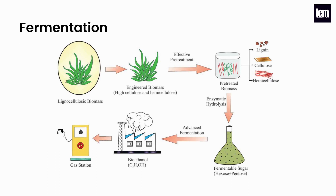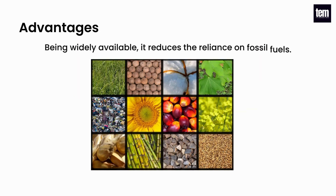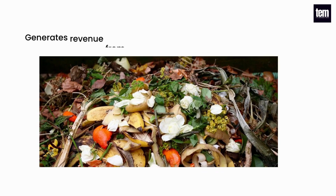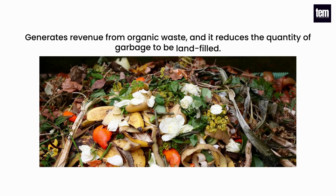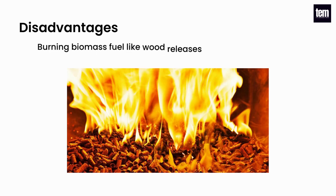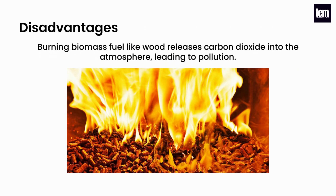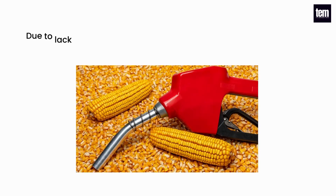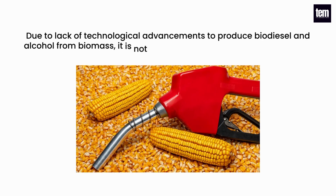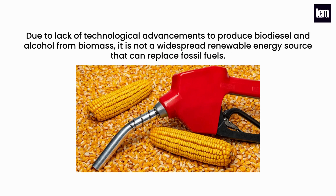Fermentation is the process of converting a plant's glucose into an alcohol called ethanol through the use of yeast. The ethanol is a liquid fuel that can be used as an automotive fuel. Advantages: being widely available, it reduces the reliance on fossil fuels. Generates revenue from organic waste and reduces the quantity of garbage to be landfilled. Disadvantages: burning biomass fuel like wood releases carbon dioxide into the atmosphere, leading to pollution. Due to lack of technological advancements to produce biodiesel and alcohol from biomass, it is not yet a widespread renewable energy source that can replace fossil fuels.